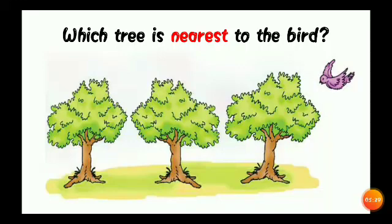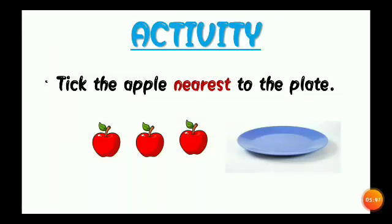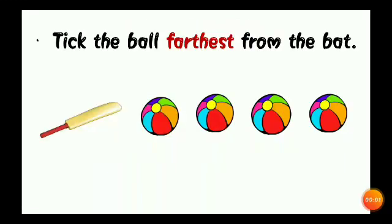Then I'm giving you an activity. And this is activity one, tick the apple nearest to the plate. Here we can see three apples and a plate. And you have to tick the nearest apple. Okay. Then second activity, tick the bowl farthest from the bat. You have four bowls in there. Which bowl is farthest from the bat. Okay. You have to do this in your notebook. Okay. That's all for today. Thank you.